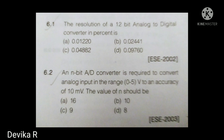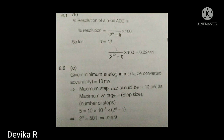The next two questions are about ADC resolution. First: the resolution of a 12-bit analog-to-digital converter as a percentage uses the formula 1 / (2^n − 1). Second: for an n-bit ADC converting 0 to 5 V with an accuracy of 10 millivolts, we use Vmax / (2^n − 1) = 10 mV. Solving this equation gives n = 9.